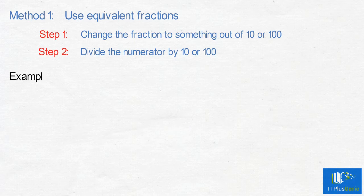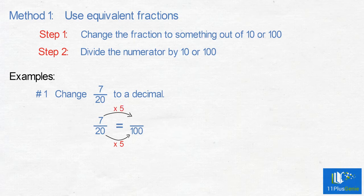Examples. Number 1: Change 7 twentieths to a decimal. Step 1: Change 7 twentieths to something out of 100. Times the denominator by 5 to get 100. We must times the numerator by 5. 7 times 5 equals 35.